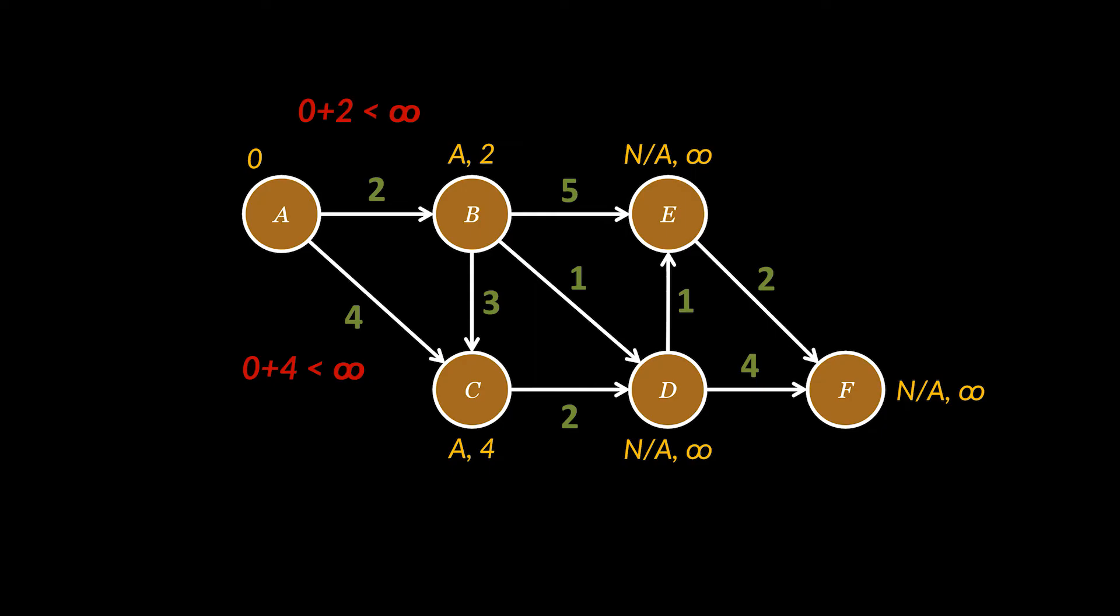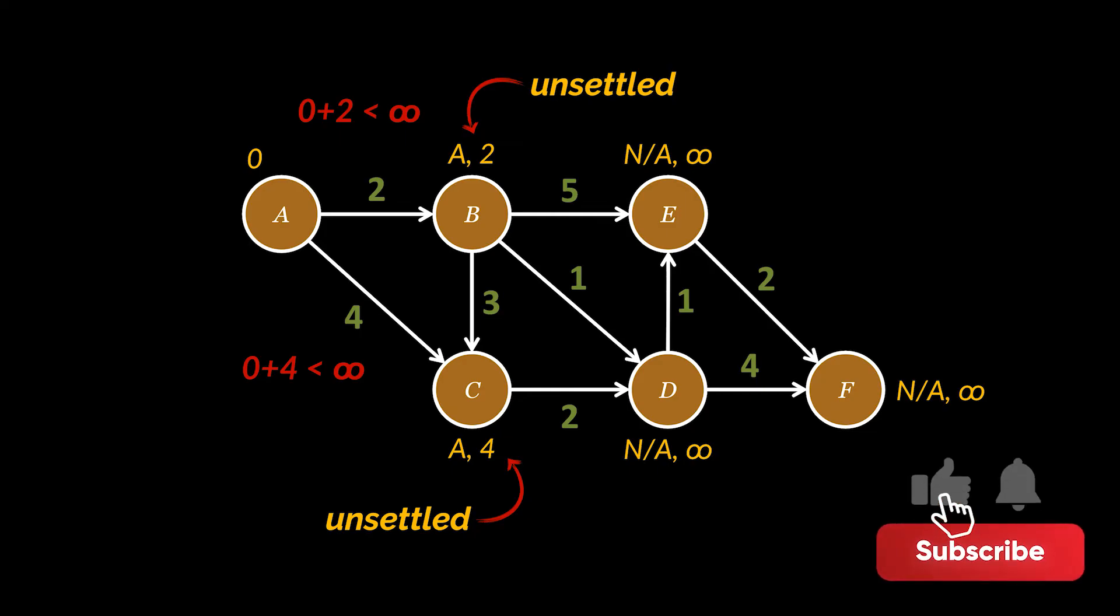Node A is now considered settled. Nodes B and C are added to the unsettled nodes because they can be reached from the source but we still need to process their adjacent nodes and make sure that the distances we picked are indeed the minimum.